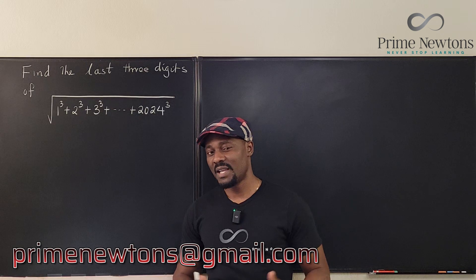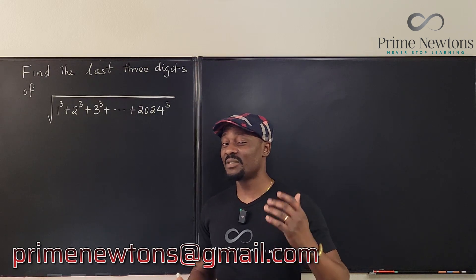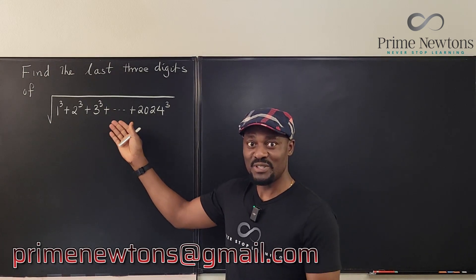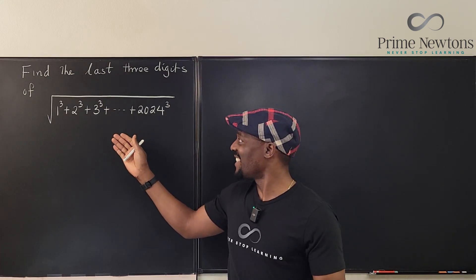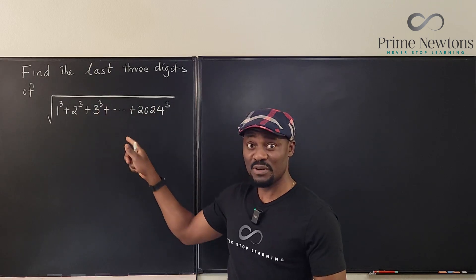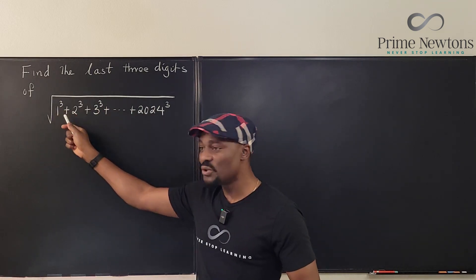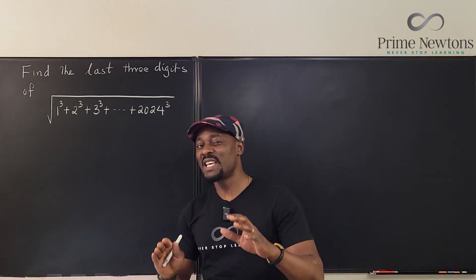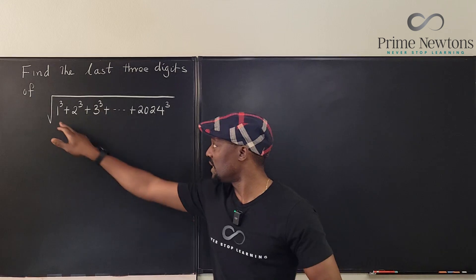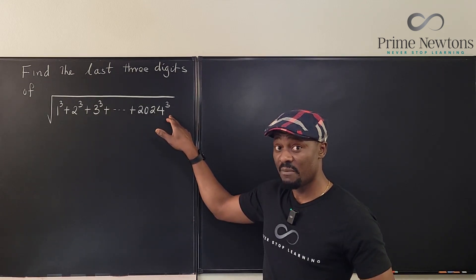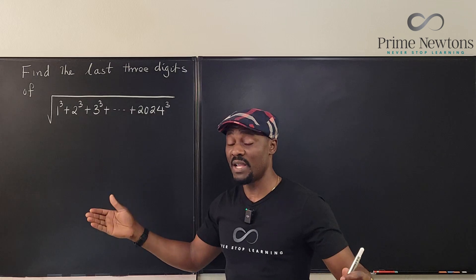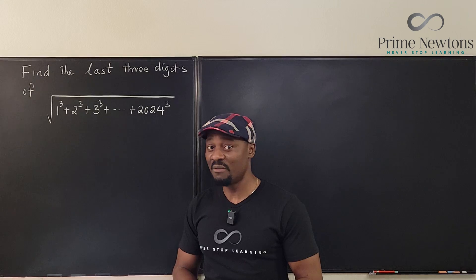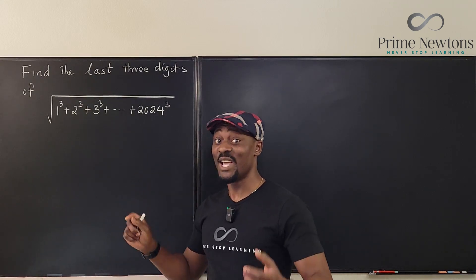Welcome to another video. Let's try to find the last three digits of this root — it's the square root of a sum where we're adding up the cubes of numbers starting from 1 and ending at 2024. This question relies on you knowing how to deal with the sum of cubes, because if you don't, there's no other way than pulling out a calculator and cubing every number from 1 to 2024.